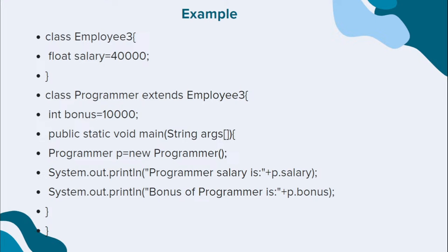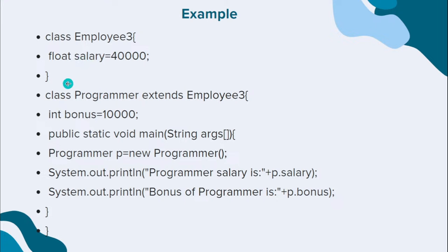Here is a simple example. Whenever I want to define a new class, I use the class keyword followed by the name of the class. Inside this class, I am initializing a variable — for example, float salary equal to some value. This variable is prepended by its corresponding data type.